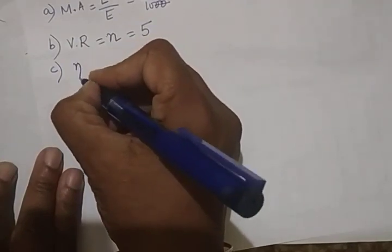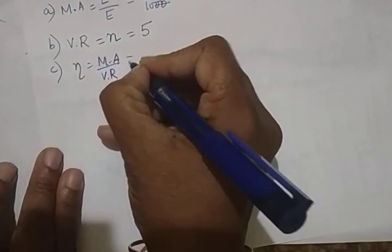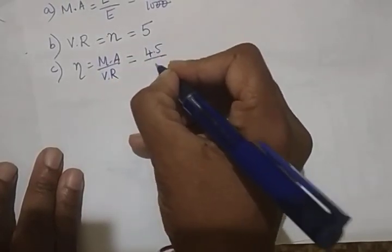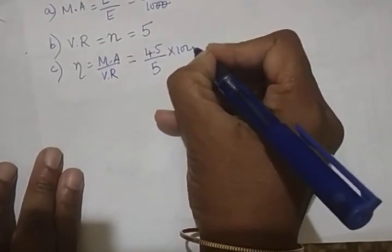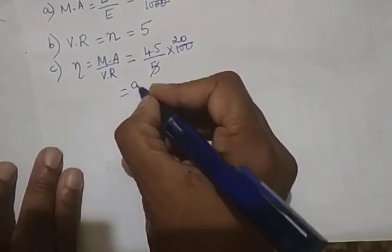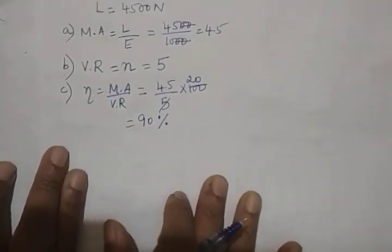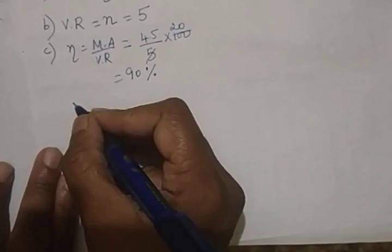Now after this, they have asked you to find the efficiency. Efficiency is equal to MA upon VR. That is 4.5 upon 5 into 100. So that will be 90 percentage. That's all. These numericals are pretty simple when compared to the other ones.